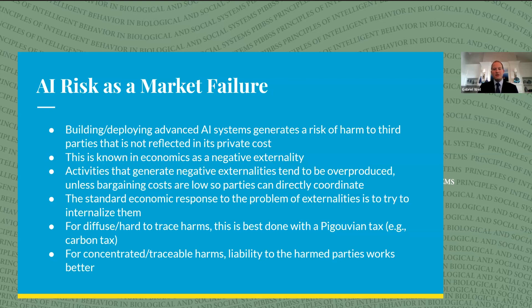The standard economic response is to use law and policy to internalize these externalities. Sometimes this is done with a Pigouvian tax — climate change is an example where greenhouse gases produce a negative externality that's hard to trace to a specific harm, so the prescription is something like a carbon tax. But harms caused by AI systems are much more likely to be concentrated and traceable — a specific system will harm a specific person. In theory, liability of the sort the tort system imposes should work pretty well to internalize that externality.